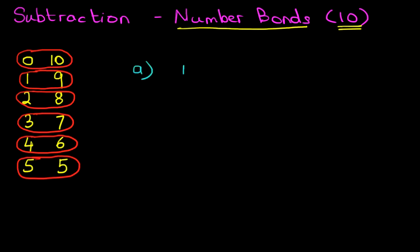Suppose we're faced with this question: 10 minus something equals 4. You can use the dot method or counting pictures. You can draw all these out, but let's use the number grid on the left.